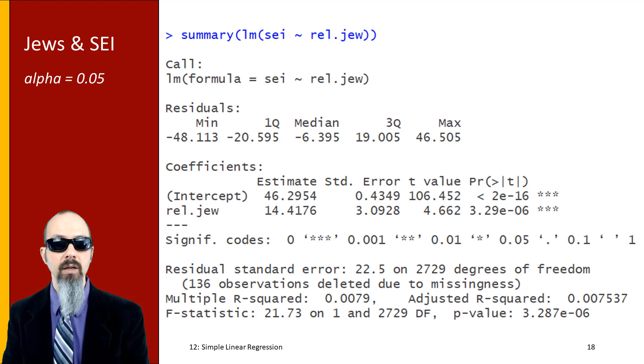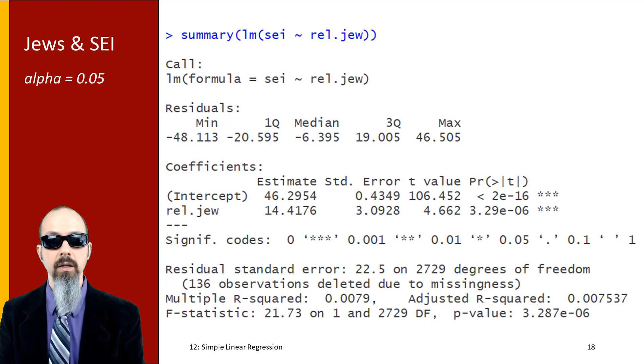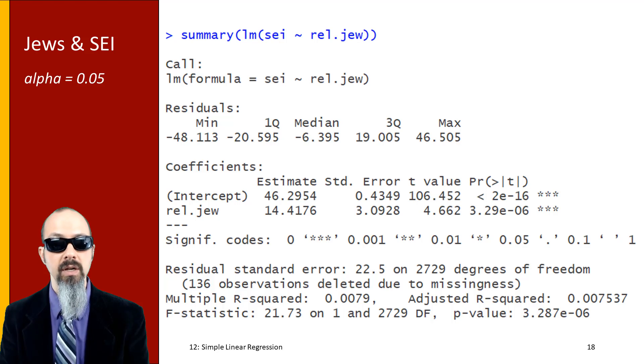Once I have those, I can put these into some regression tests. I'm regressing each religion, each religious dummy one at a time onto SEI. First up, let's look and see how do Jews compare to all other religions on socioeconomic index when alpha is 0.05. The model and variable are highly statistically significant and I have a coefficient intercept of about 14.4. This means that having Judaism as your religious identity corresponds with an increase of 14.4 on the socioeconomic index compared to all other religious groups.